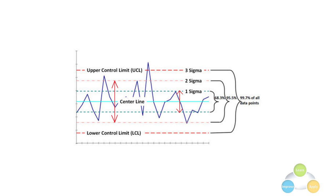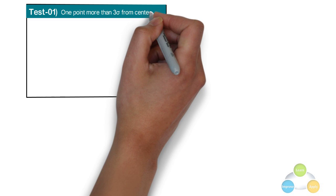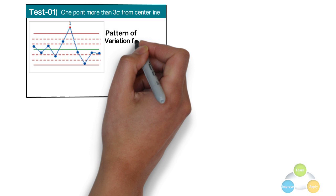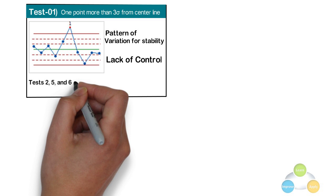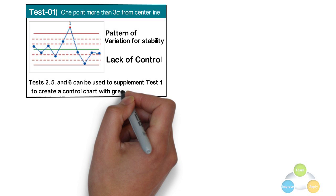Test 1: 1 point more than 3 sigma from the center line. Test 1 evaluates the pattern of variation for stability. Test 1 provides the strongest evidence of lack of control. If small shifts in the process are of interest, tests 2, 5 and 6 can be used to supplement test 1 to create a control chart with greater sensitivity.